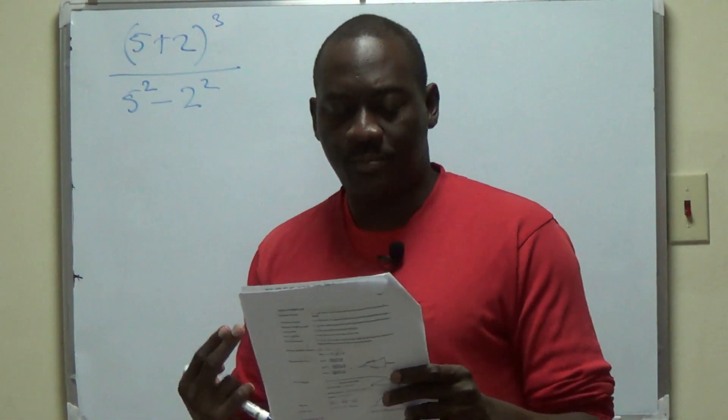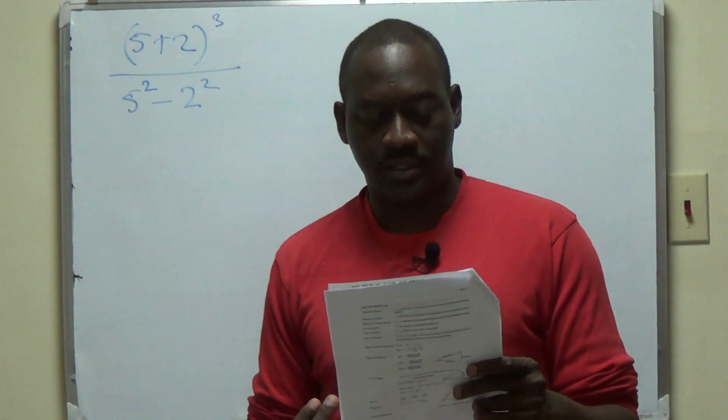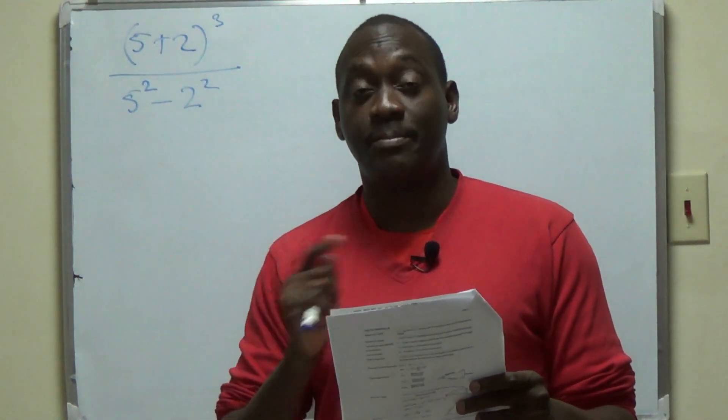What is the value of 5 plus 2 all to be cubed over 5 squared minus 2 squared in its simplest form?